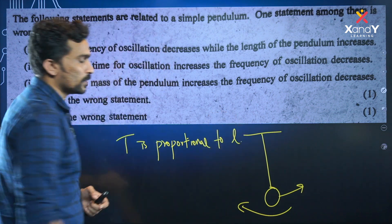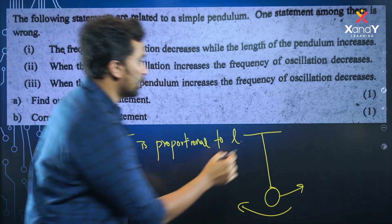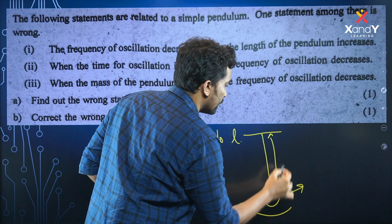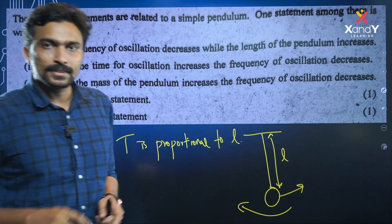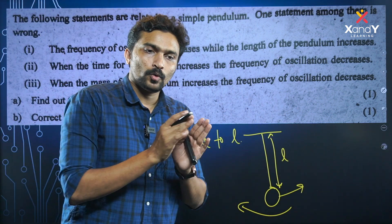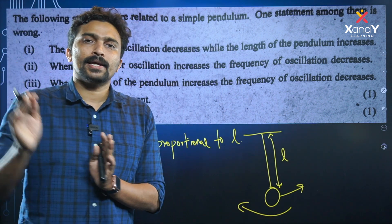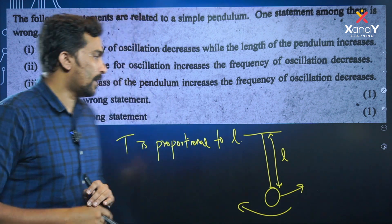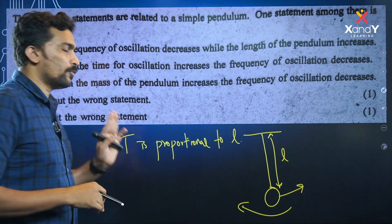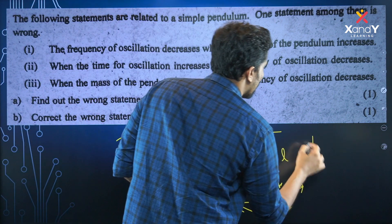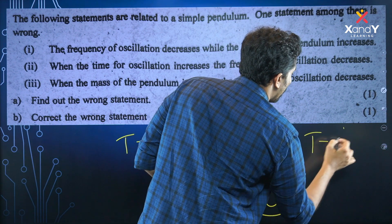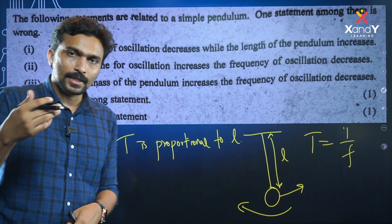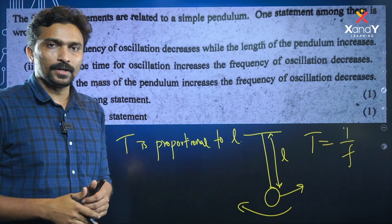Time period is proportional to length. If length increases, time period increases — it takes longer to complete a round. Time period and frequency have an inverse relationship: time period is equal to one divided by frequency, and frequency is the reciprocal of time period.